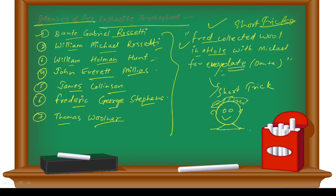'Fred collected wool in a hole with Michael for every date.' Date represents Dante. There is a short trick so you can make like: Fred for Frederick, collected for Collinson, Everett, in a hole for Holman, Michael, and date for Dante. So you can now correlate these words and remember these writers with this short trick.